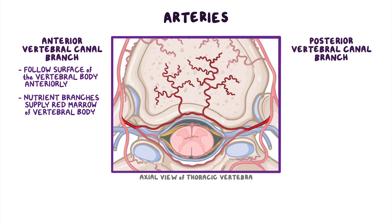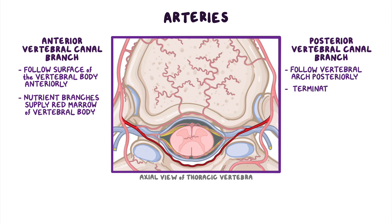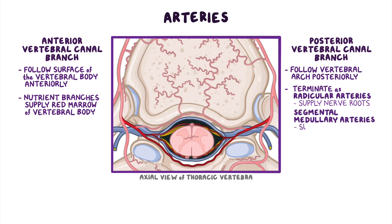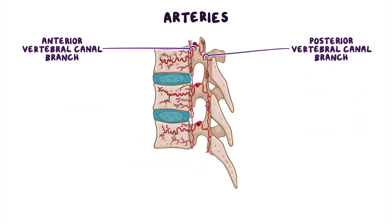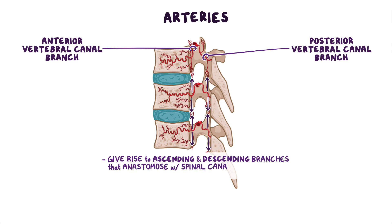Posterior vertebral canal branches follow the vertebral arch posteriorly within the vertebral canal. These branches terminate as radicular arteries that supply the nerve roots, and segmental medullary arteries that supply the spinal cord. Finally, both of these branches give rise to ascending and descending branches that anastomose with spinal canal branches of adjacent levels.